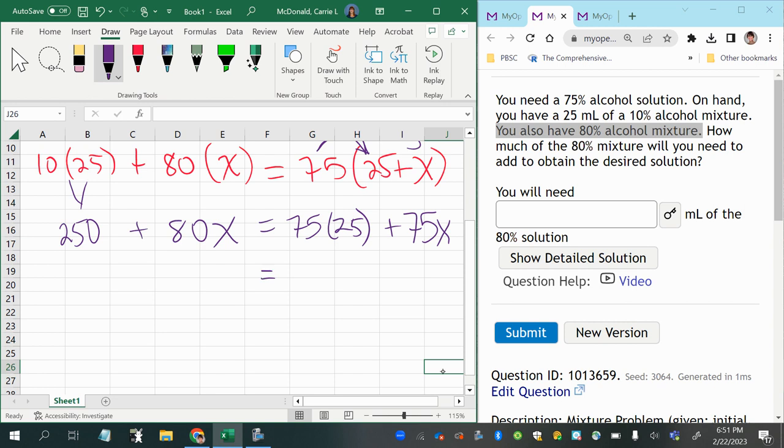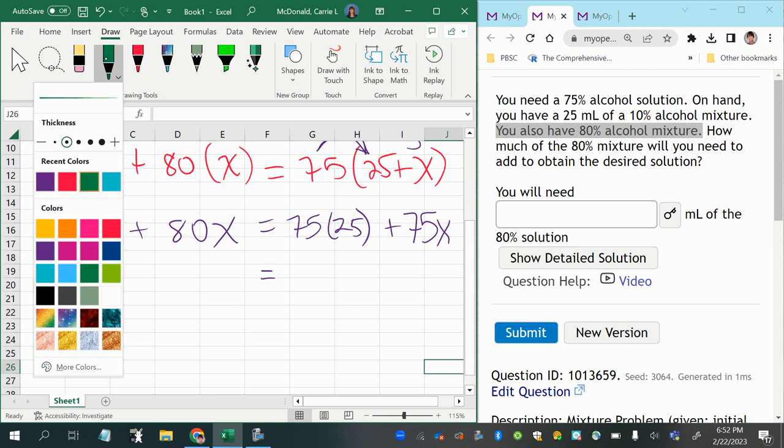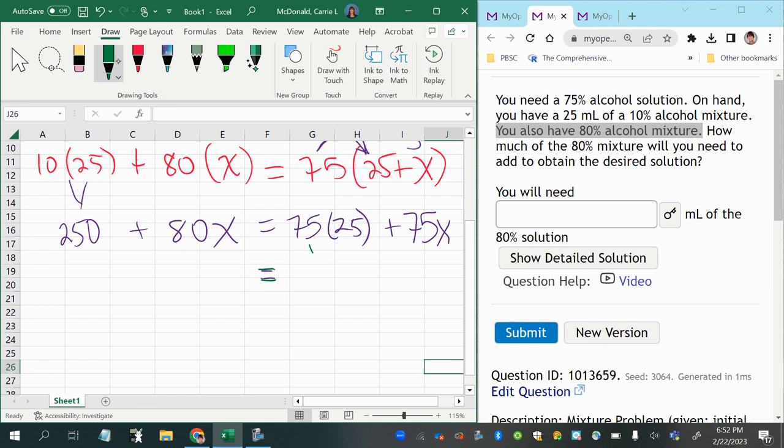Just simplifying further and further. I'll use a different color for this line. So 1,875 plus 75x. Just simplifying here. Then bring down the 250 and the 80x. There's nothing to simplify here. Now you can combine like terms.